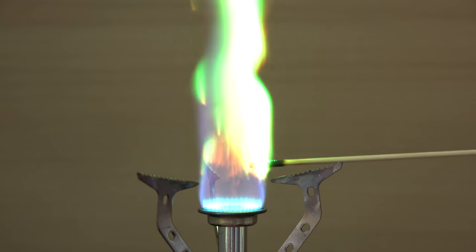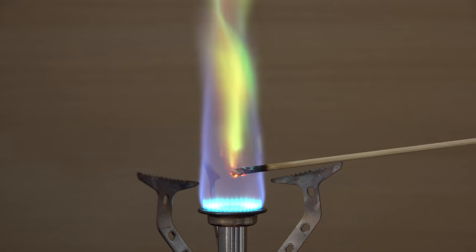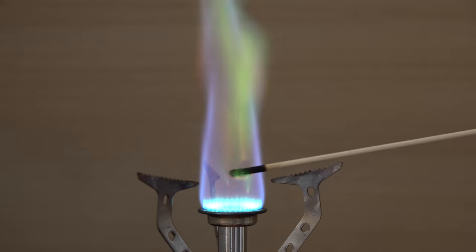If you put copper sulfate into a flame, it will turn green because of the copper ions.